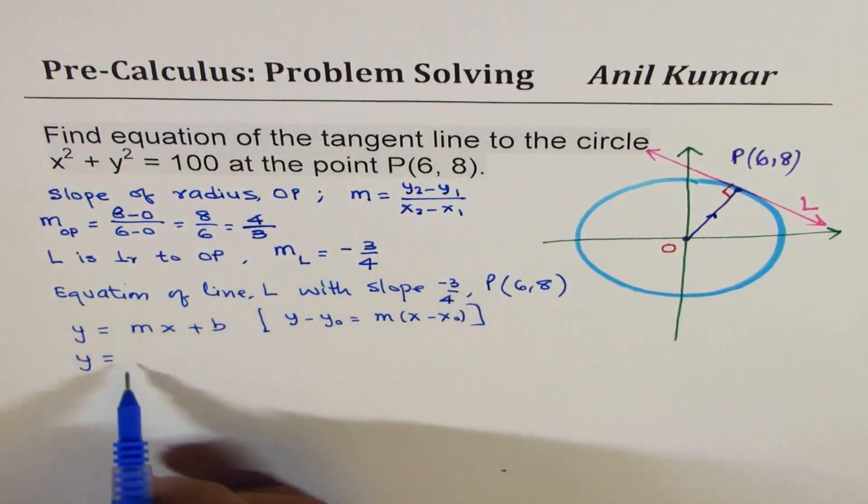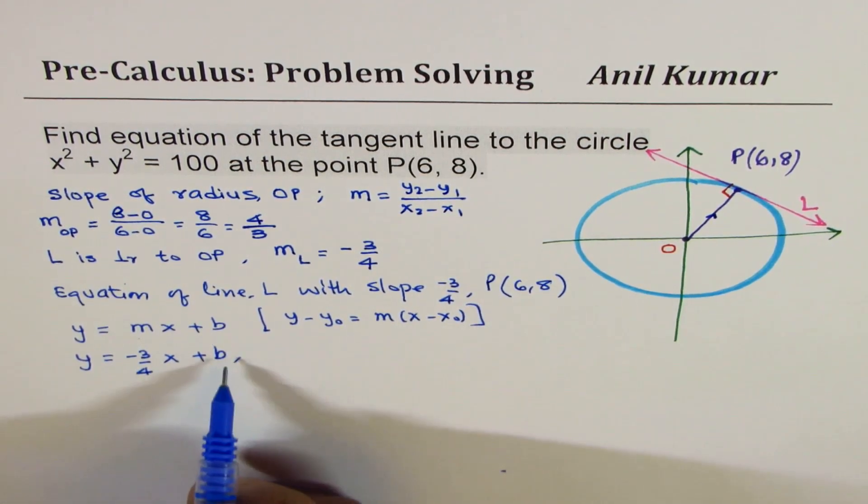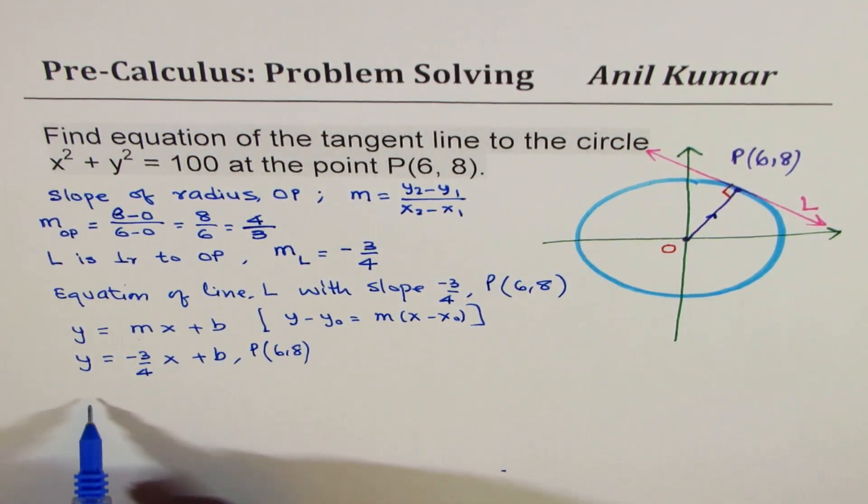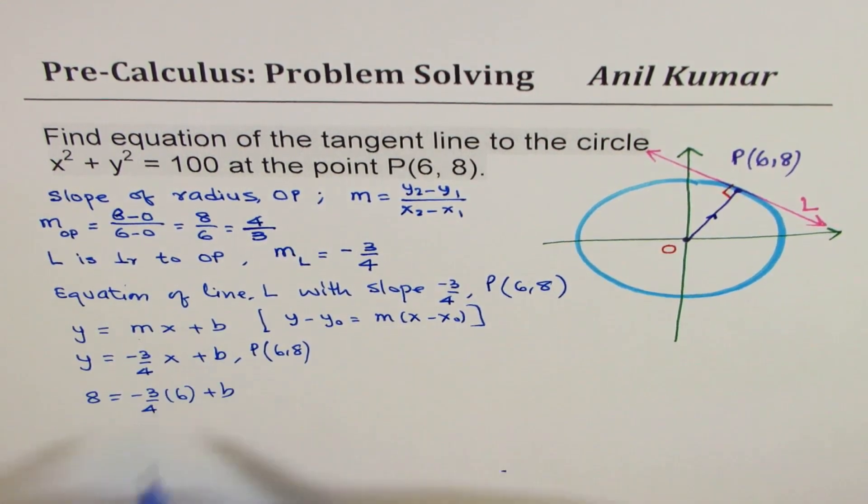So I will use the formula which my students are more familiar with, y equals mx plus b. Now, here we know what the slope is. We say y equals minus 3 over 4x plus b. To find the value of b, we will use the point P, which is (6,8). Substituting 8 for y gives us 8 equals minus 3 over 4 times 6 plus b.